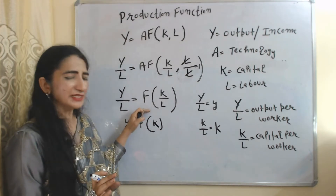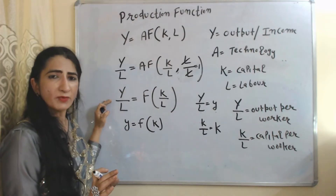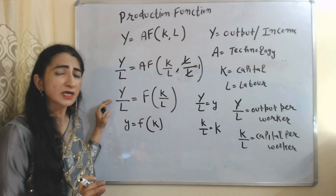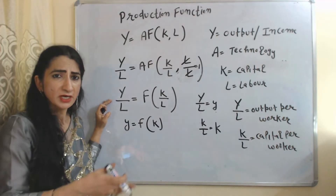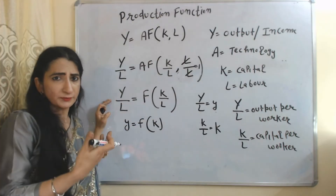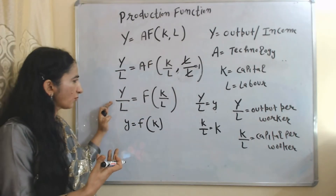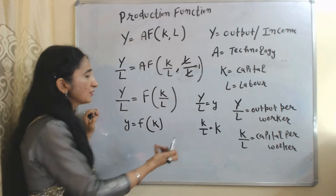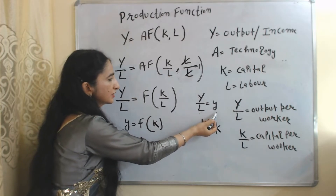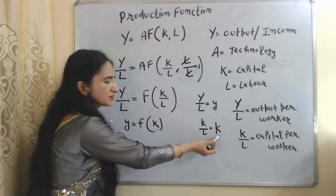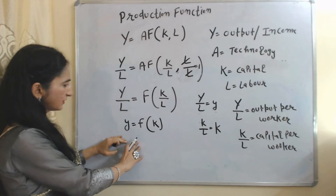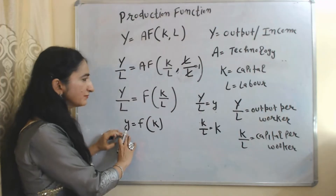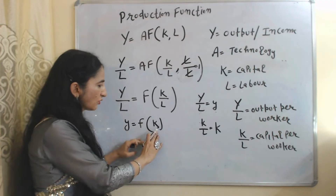That means if we change capital per worker, then output per worker will also change. Obviously, if you are giving more machinery to your workers for production, their output will also change. For the sake of simplicity, we write Y/L as small y and K/L as small k. After writing this, our equation becomes: small y = f(small k), where small y means output per worker and small k means capital per worker.